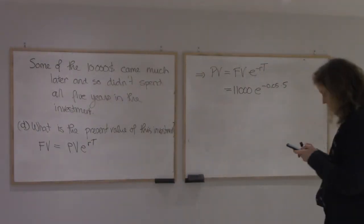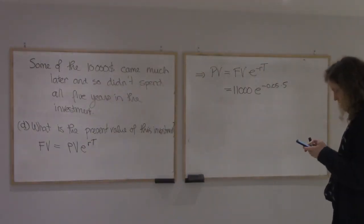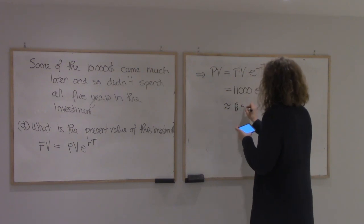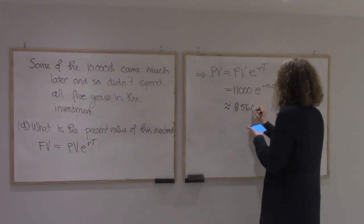And so I've got 11,000 times e to the minus 0.05 times 5. So I get 8,566.81.